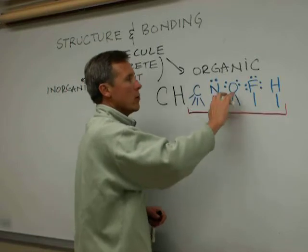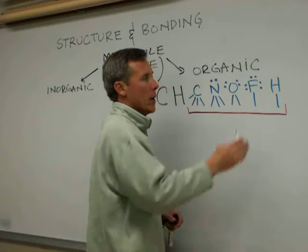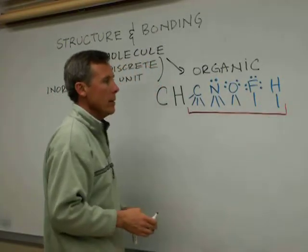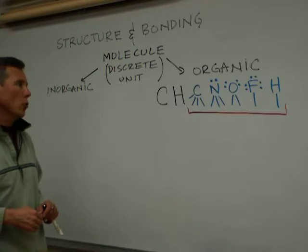Oxygen gets two bonds and three electron pairs, chlorine gets one bond and three electron pairs, and hydrogen gets one bond. We can easily draw organic molecular structure.